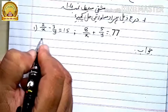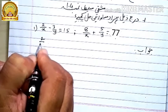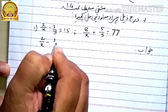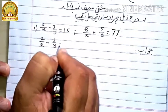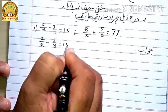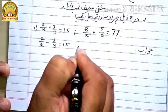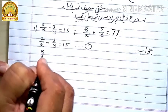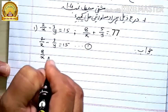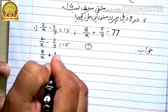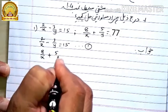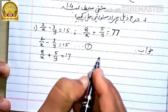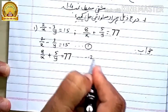پہلے ہم دیئے ہوئے مساواتیں لکھ لیتے ہیں۔ دو بٹے ایکس نفی تین بٹے وائے برابر پندرہ — اس کو مساوات نمبر ایک دے دیں گے۔ آٹھ بٹے ایکس جمع پانچ بٹے وائے برابر ستیتر — اس کو مساوات نمبر دو دے دیں گے۔